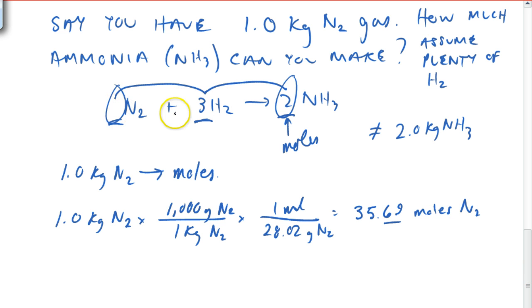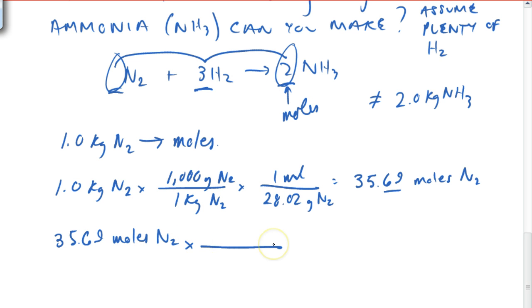And that gives me about 35 moles—we're going to keep a couple extra sig figs here. Now I can use these ratios from the balanced equation. So now I'm going to take 35.69 moles N2, and remember the factor label method: I've got—this is what I have, so I'm going to put the units that I have on the bottom because I want to get rid of them, and I'm going to put the units that I want on the top, which in this case is going to be moles of NH3.